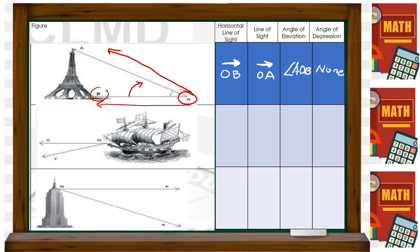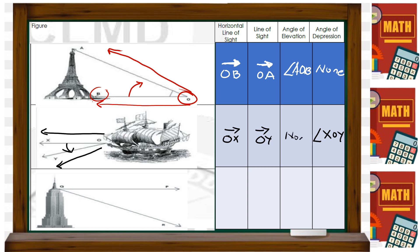Let's try the second example. The fixed horizontal line is ray OX, and the one going below is ray OY. Since it's below, it's an angle of depression, which is angle XOY. There's no angle of elevation.